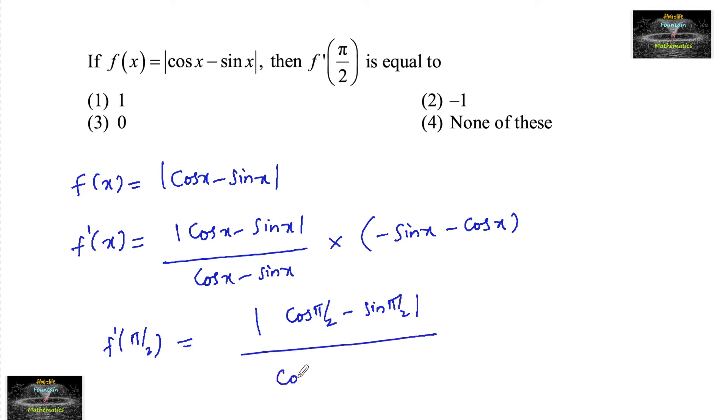divided by cos π by 2 minus sin π by 2, into minus sin π by 2 minus cos π by 2.